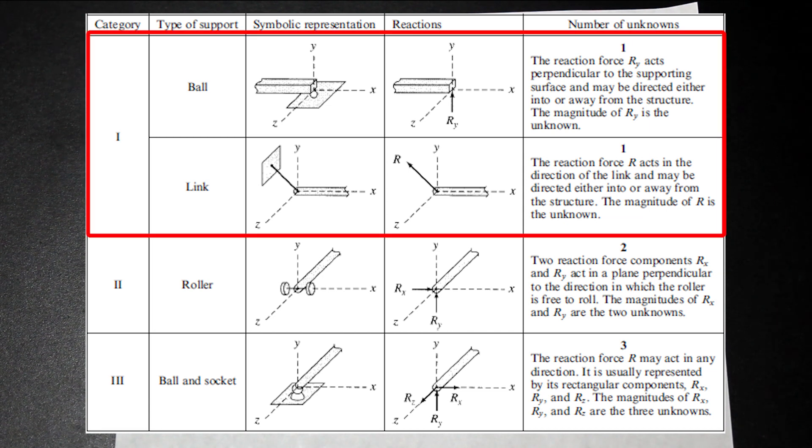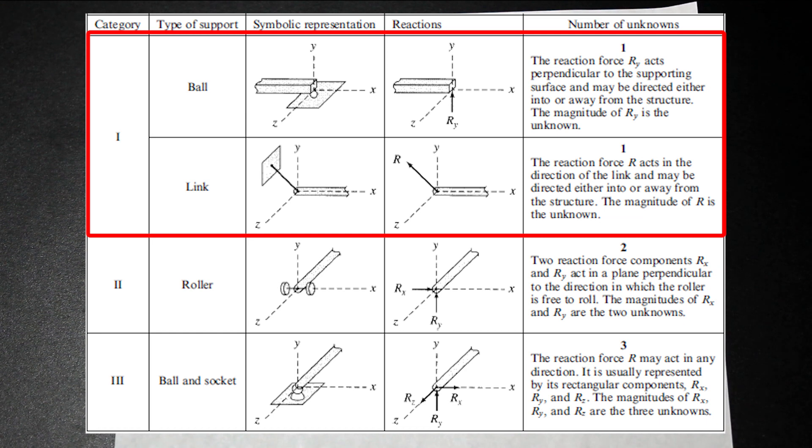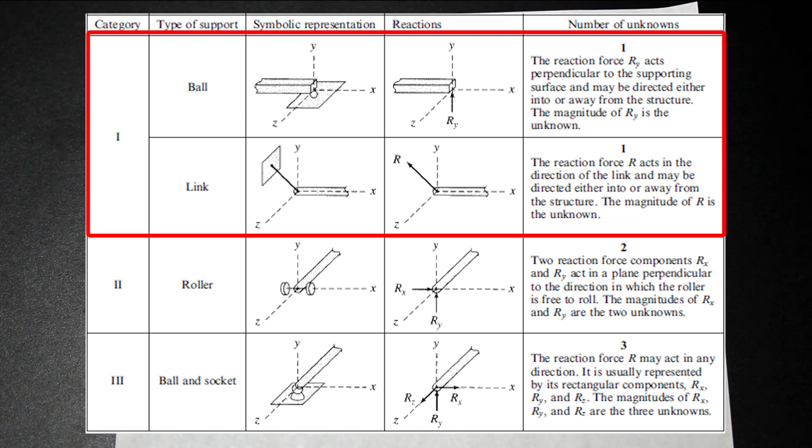So if you take a look at the category one type force, what we have, for example, ball is we have some sort of structure sitting on a roller or just a sphere, and you see that R-Y is vertical. So R-Y is vertical there. That means we only have one reaction and a link, same thing.